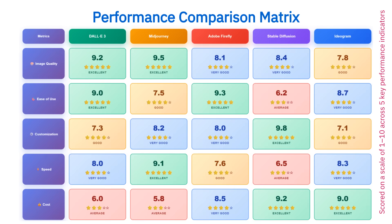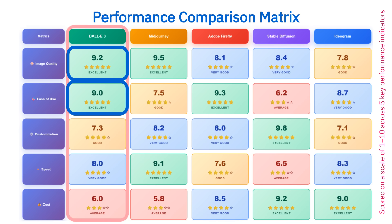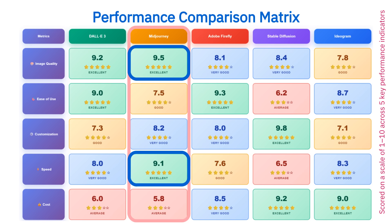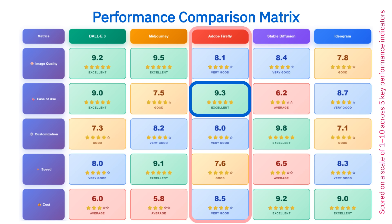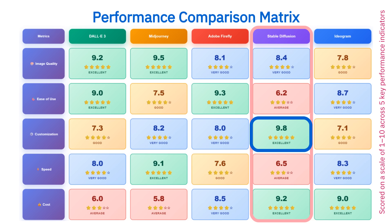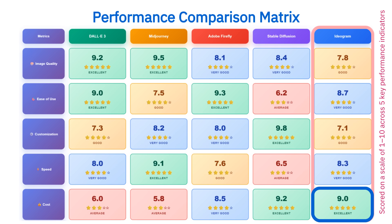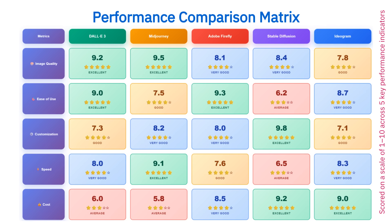Here's a quick performance snapshot of the top five AI image generators, rated from 1 to 10 across five key areas: image quality, ease of use, customization, speed, and cost. DALL-E 3 delivers balance — excellent quality, easy to use, and smart prompt handling, but a bit pricey. Midjourney takes the crown for stunning visuals and lightning-fast speed, perfect for artists craving realism and flair. Adobe Firefly is your go-to for beginners and pros alike — seamless, polished, and budget-friendly. Stable Diffusion leads in customization — open source, flexible, and made for developers who love control. Ideogram scores high on cost and clarity, ideal for creatives focused on text-heavy designs and simplicity. Every tool has its edge — so what's your pick?